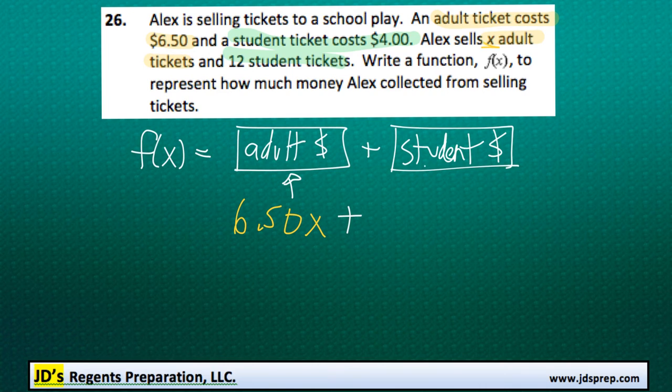And then we're going to add the amount of money made from student tickets. We know that each student ticket costs $4, and we're going to multiply that by the number of student tickets sold. And we actually know that he sold 12 tickets, so we're going to do that times 12.